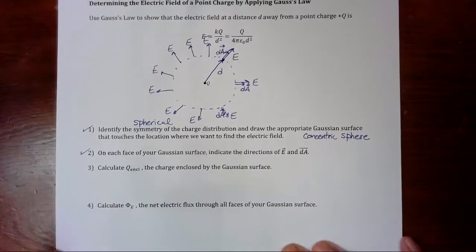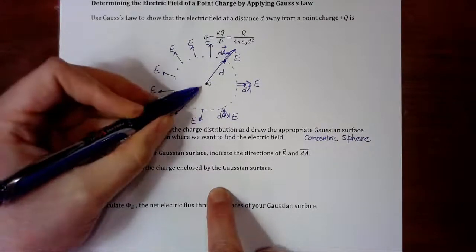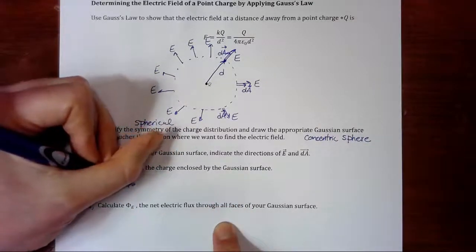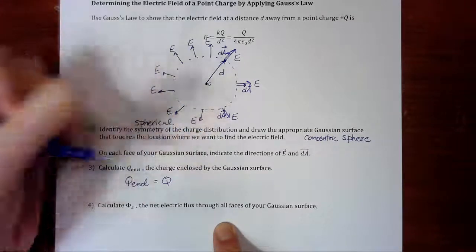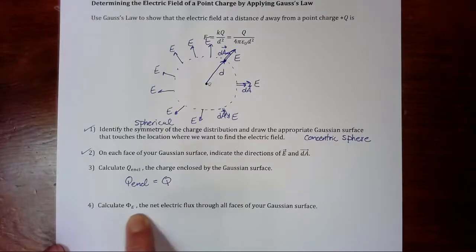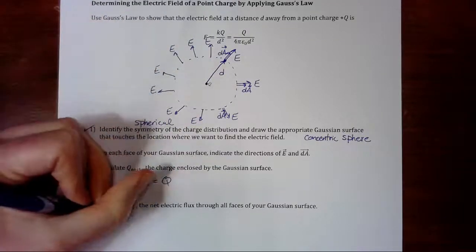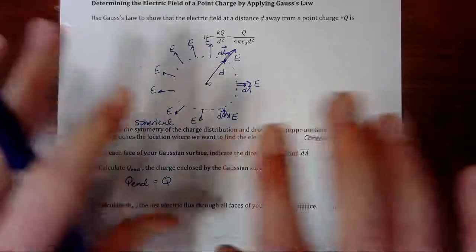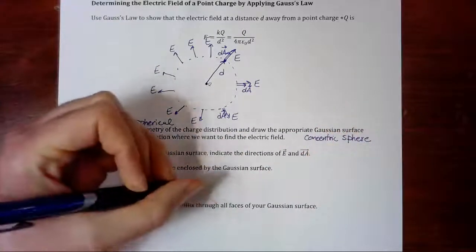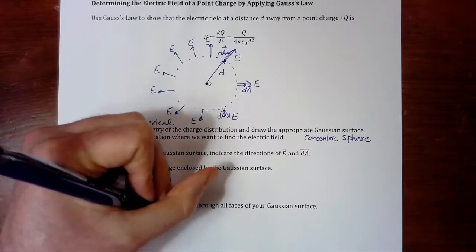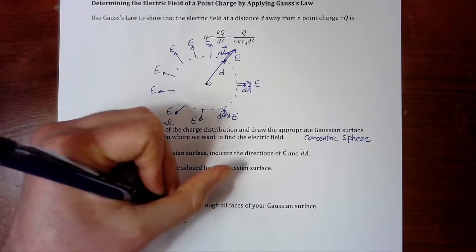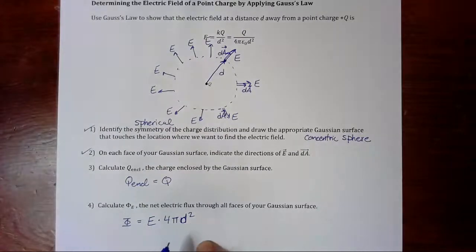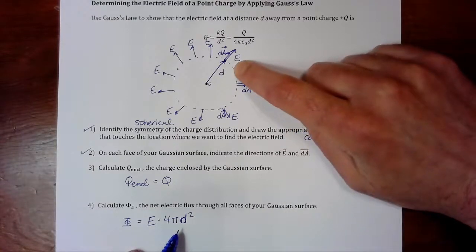Calculate q enclosed, the charge enclosed by the Gaussian surface. That's easy. q enclosed is just q. Calculate the net flux through all faces of our Gaussian surface. While this is a sphere, it only has one face. So the flux is going to be the electric field times the surface area of the sphere. And the surface area of the sphere is 4π d squared. Right? Because our Gaussian, it's the surface area of our Gaussian sphere. And our sphere has a radius of d.